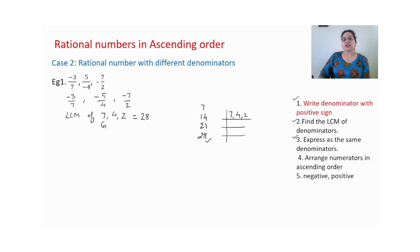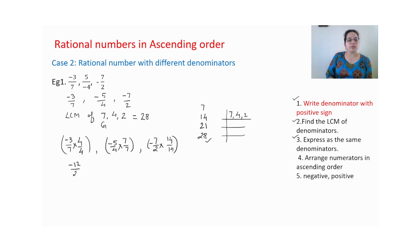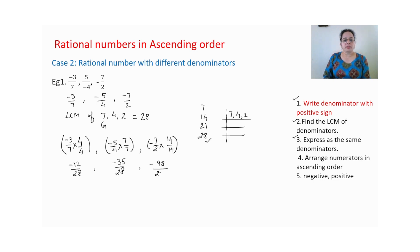Next step: express the fractions with the same denominator. First fraction minus 3 by 7 — multiply by 4 by 4 to get denominator 28. Second fraction minus 5 upon 4 — multiply by 7 by 7. Last fraction minus 7 by 2 — multiply by 14 by 14. After multiplying, you get minus 12 upon 28, minus 35 upon 28, and minus 98 upon 28. All rational numbers are now converted to the same denominator.